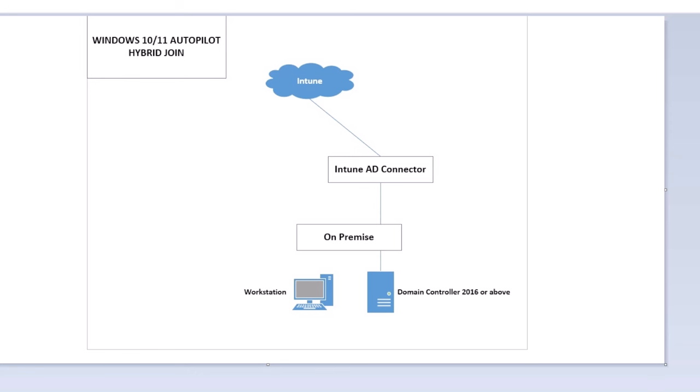Every time you run a machine through autopilot, it'll join Azure AD, enroll in MDM, and join your domain controller without any errors. The machine has to have a way to reach the domain controller. In this demo I'm running the machine from the same network as the domain controller, though some people run it from outside using a VPN before the machine goes through the autopilot.